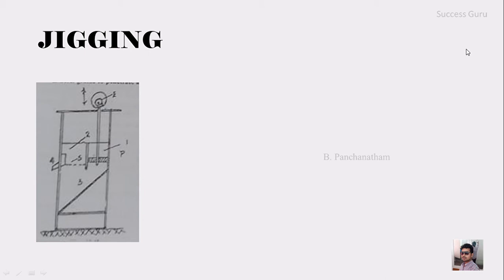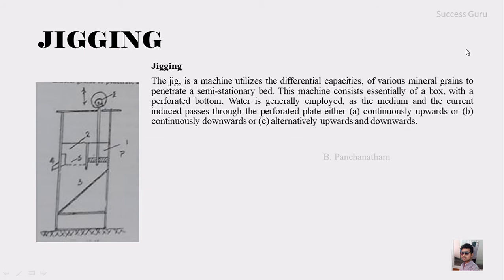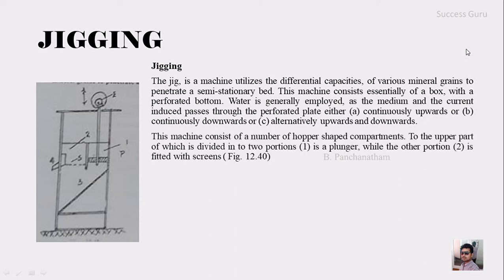The next topic is jigging. The jig is a machine that utilizes the differential capacities of various mineral grains to penetrate a semi-stationary bed. This machine consists essentially of a box with a perforated bottom; water is generally employed as a medium, and the current induced passes through the perforated plate either continuously upward, continuously downward, or alternatively upward and downward, according to requirement.